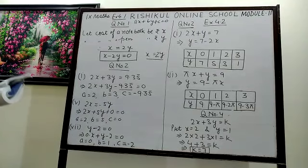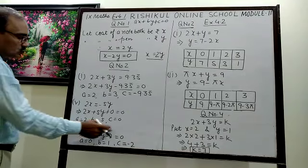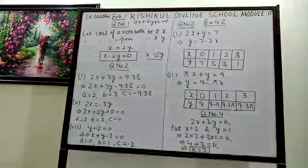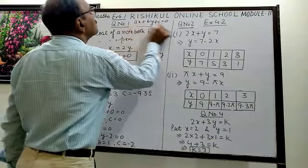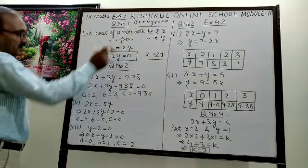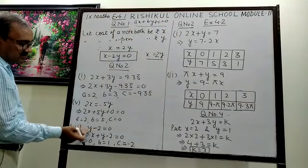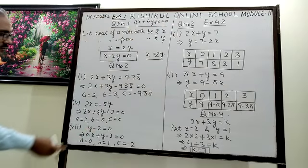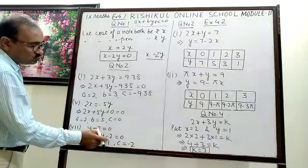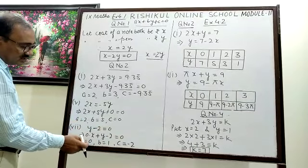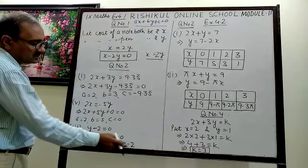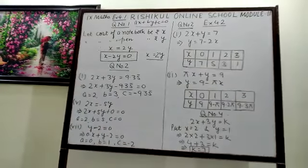For the seventh part, y minus 2 equals 0. Here the x variable is not present, so you write it as 0x plus y minus 2 equals 0. So A is 0, B is 1, and C is minus 2.